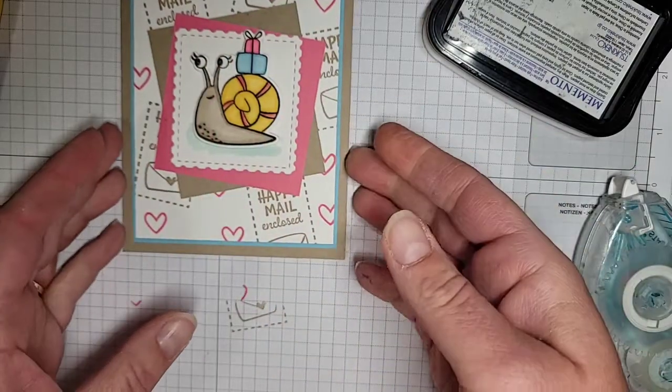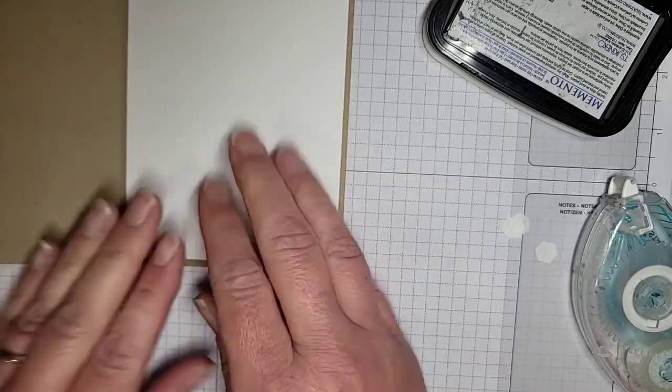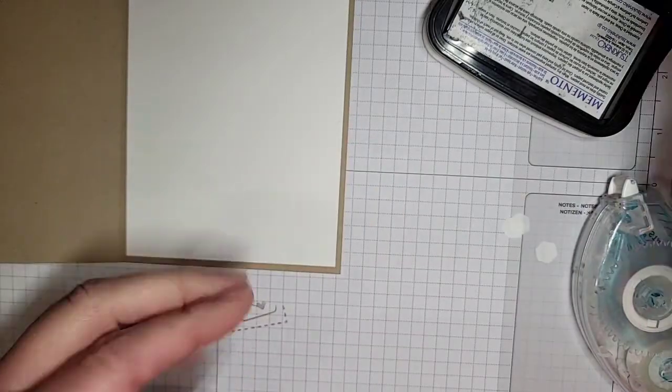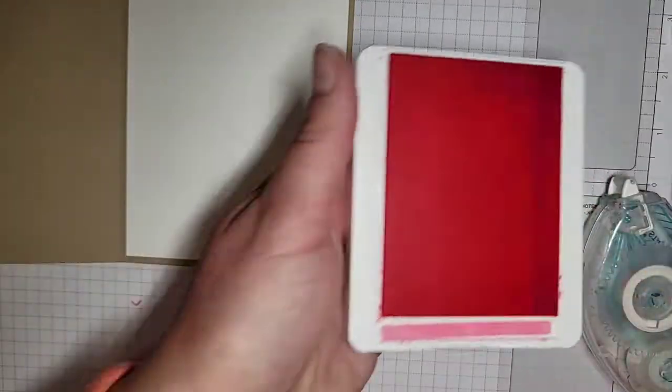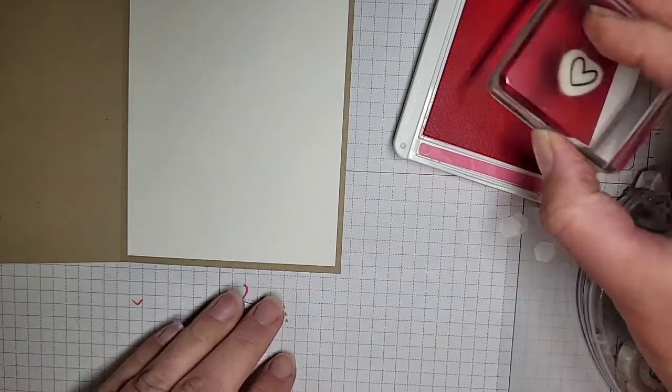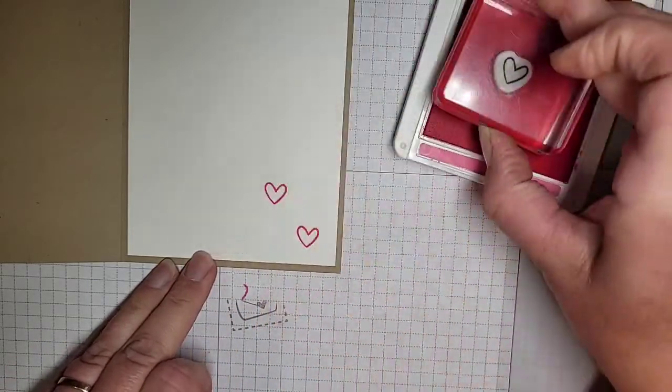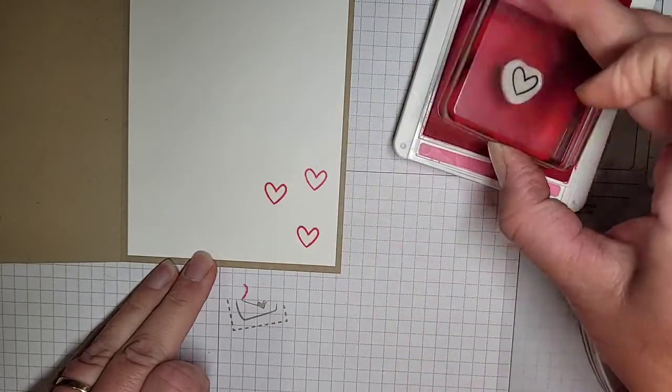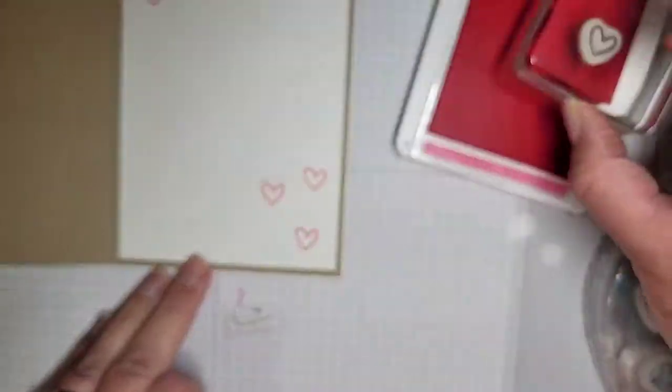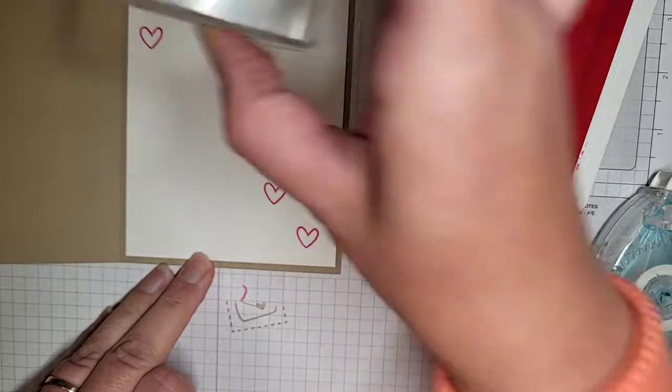Now for one of the finishing touches, on the inside I said I want to stamp something. Because this is happy mail and I just want somebody to know I was thinking of them, I'm going to stamp just a couple of these cute little floating hearts in here. That's why it didn't matter if I attached this first or not.